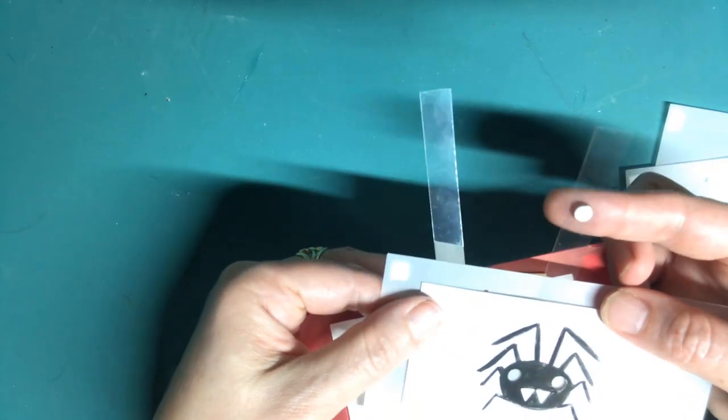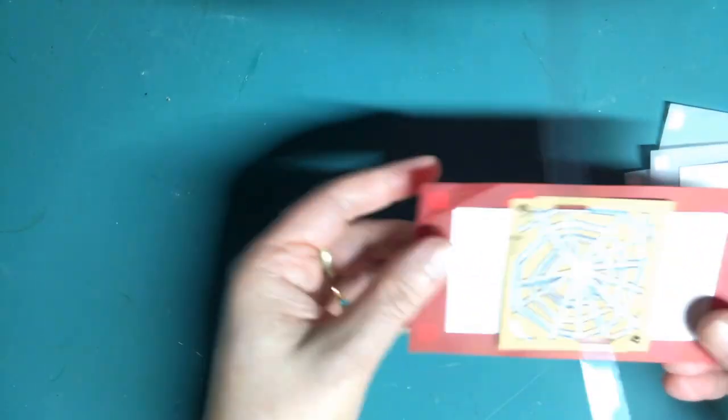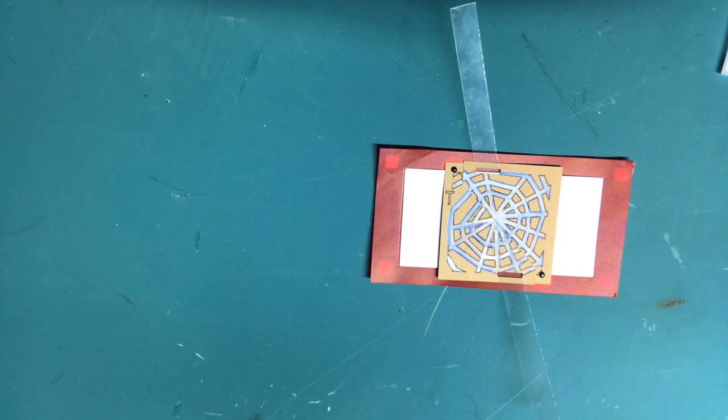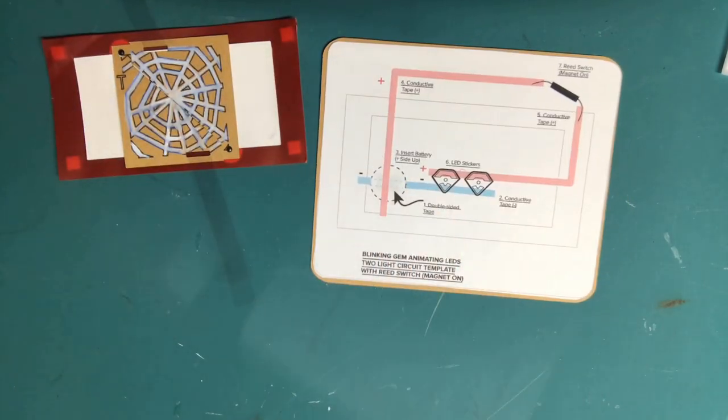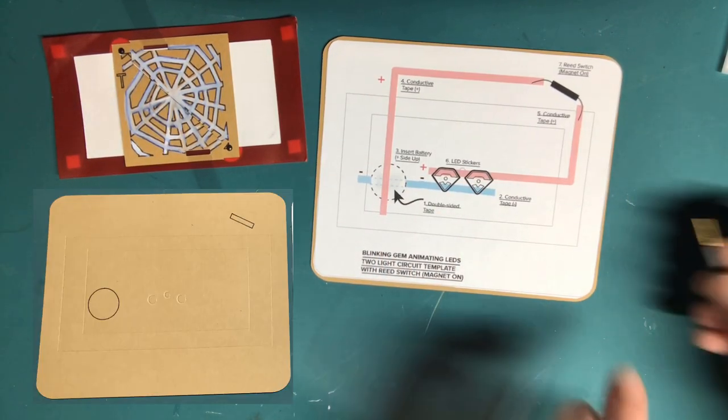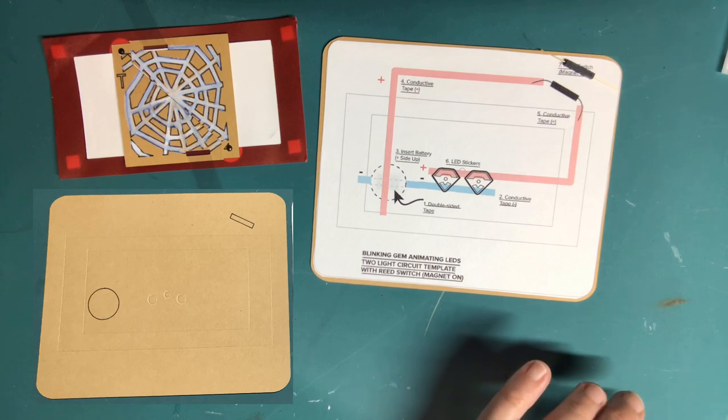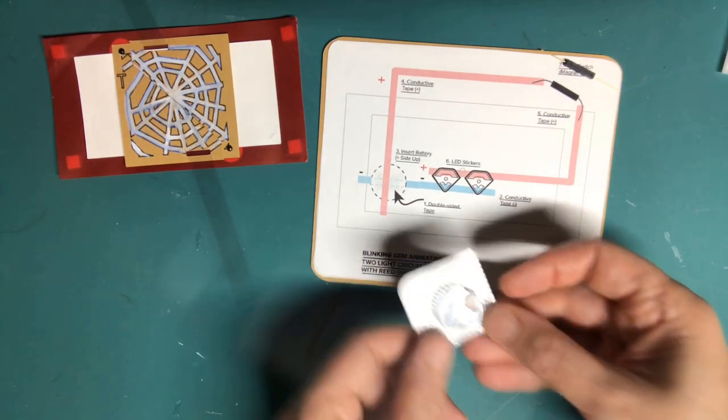In an upcoming step you'll be attaching the magnet to the backside of the lever. But first we need to build the circuit. While you could use the markings on your card back, I find it easier to print, cut, and tape or glue the template directly on top.